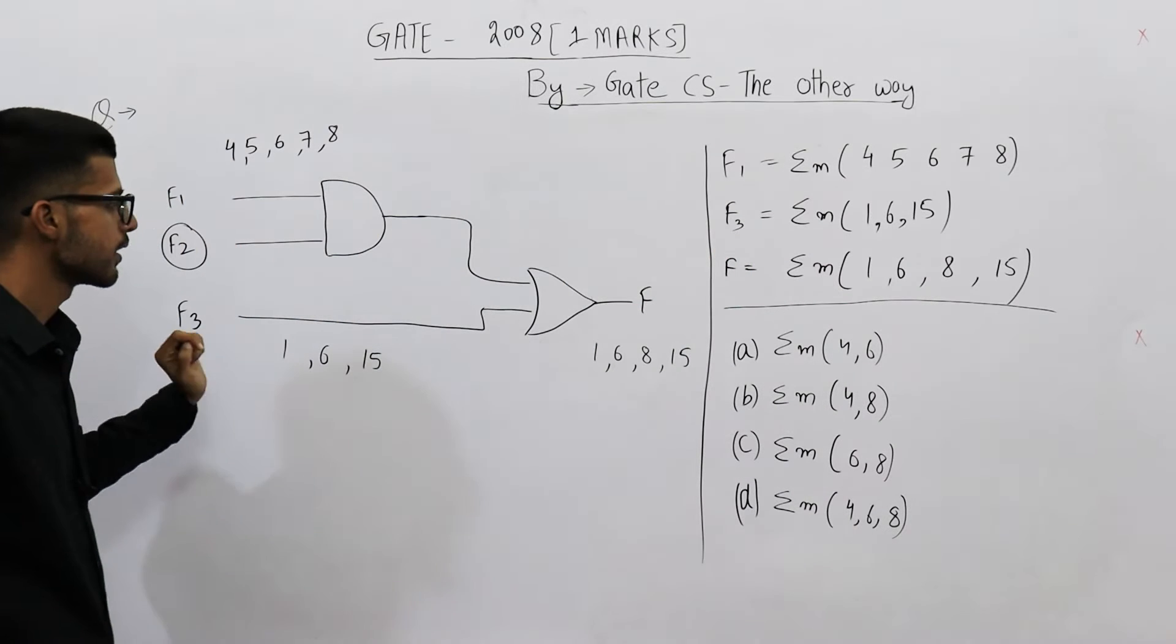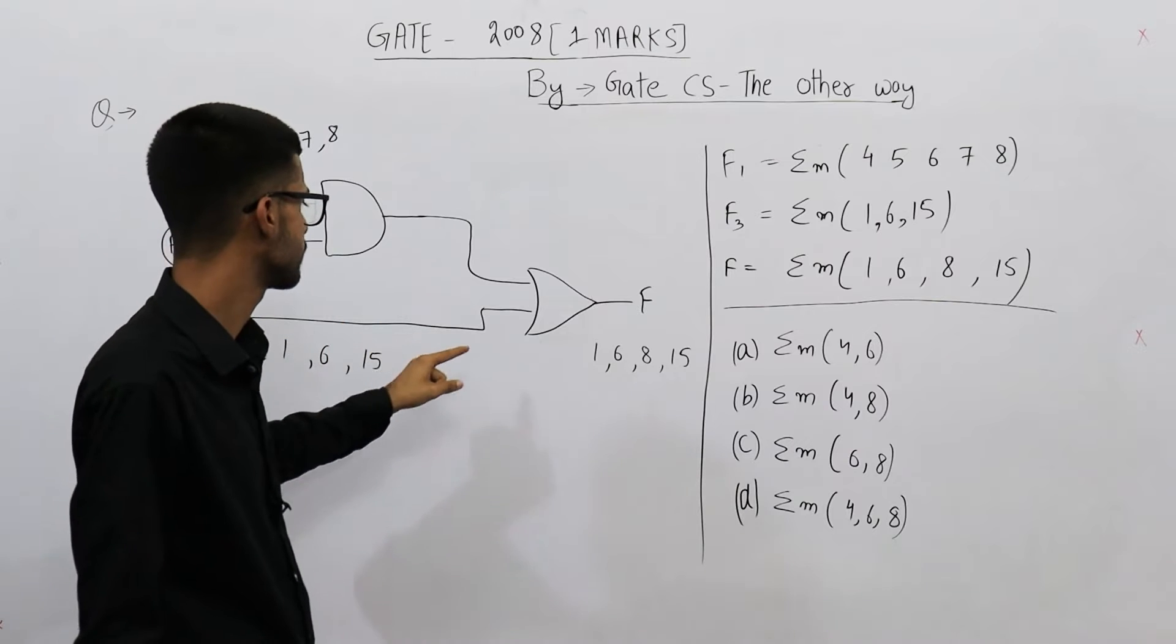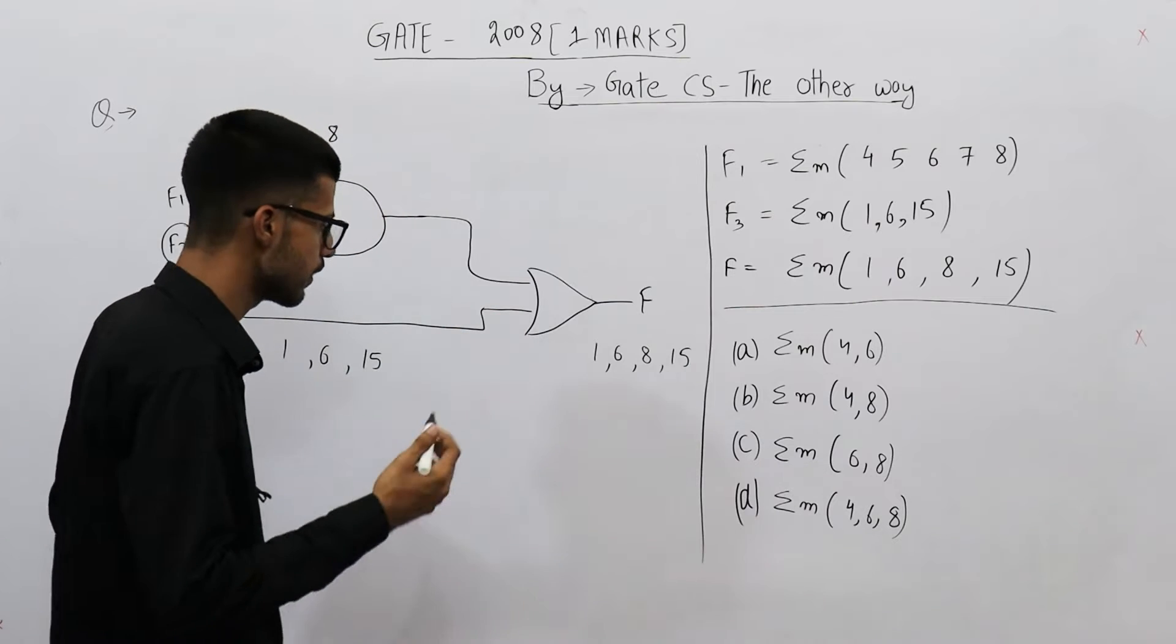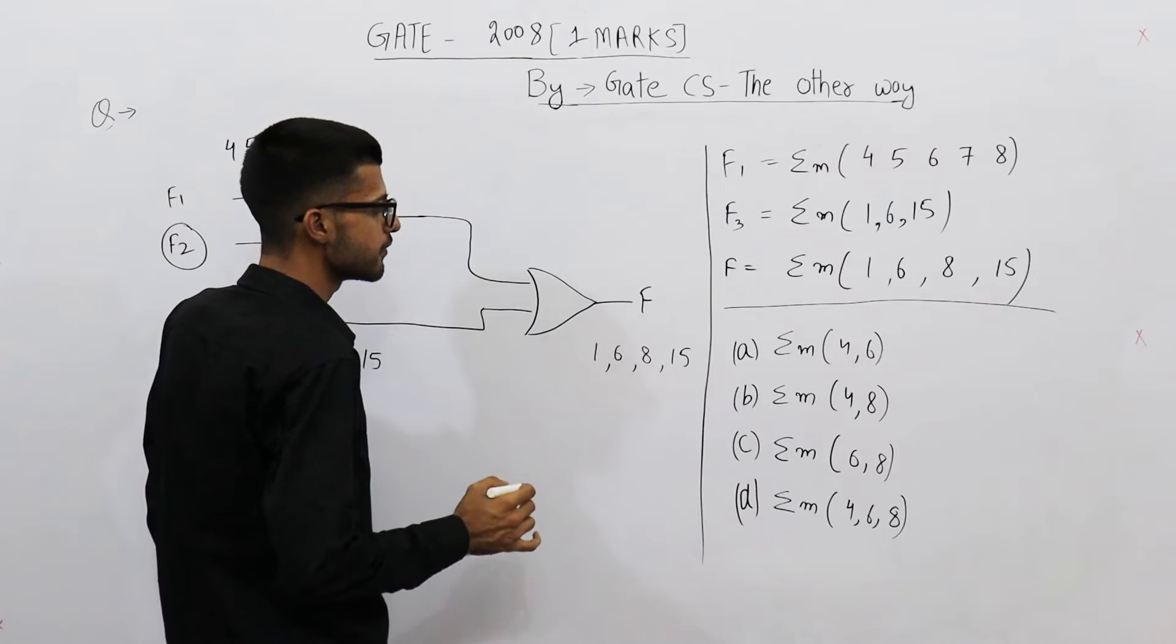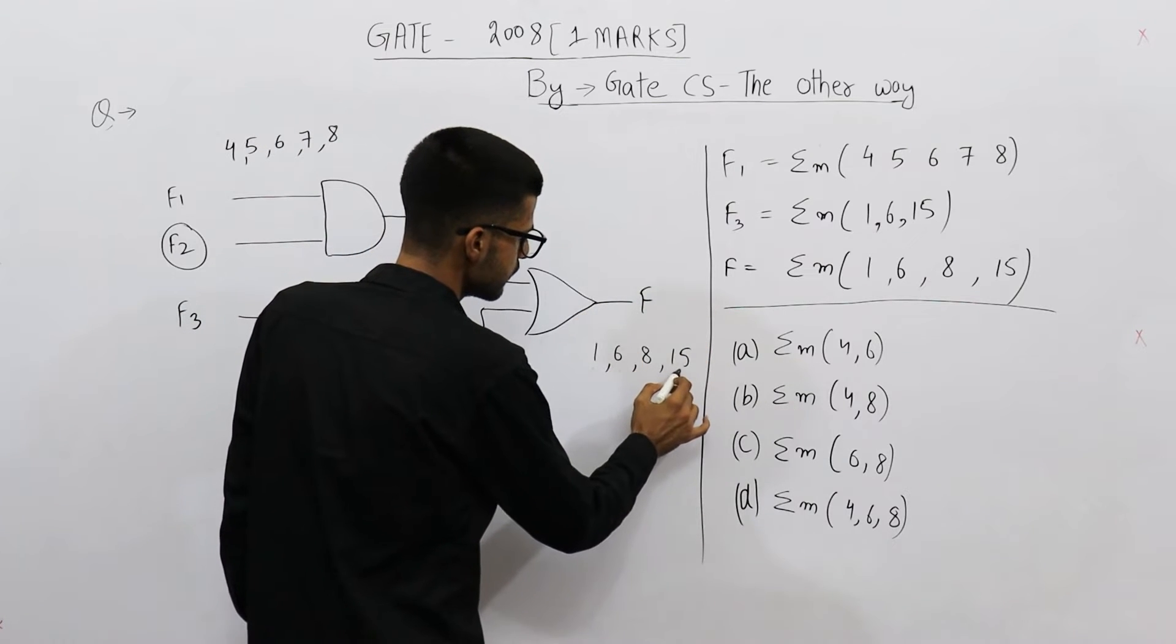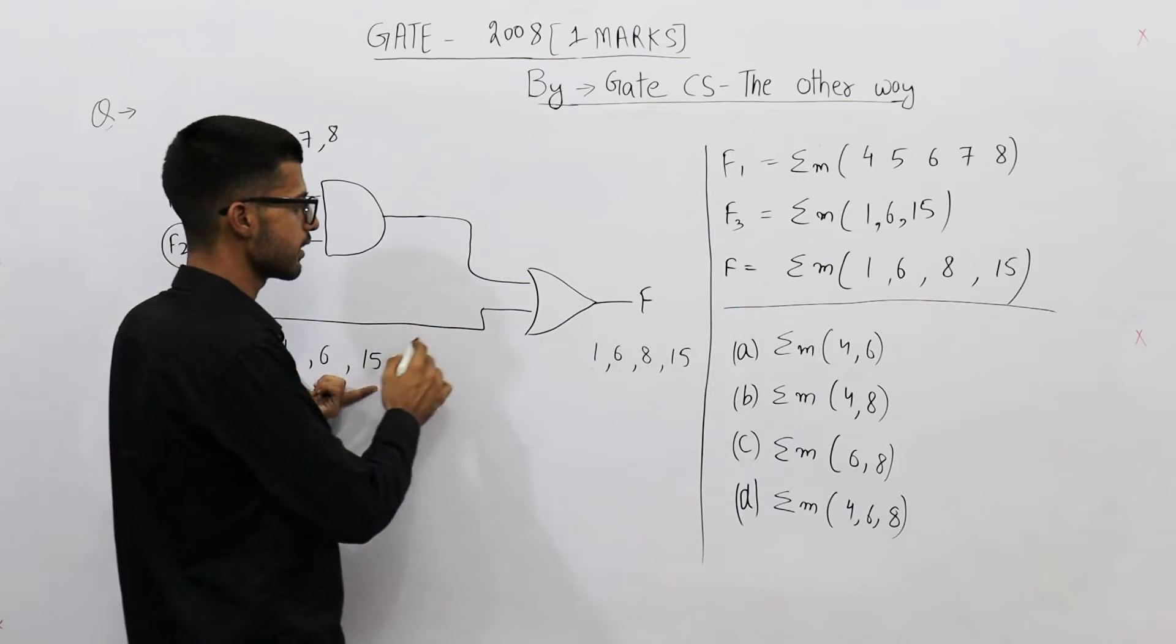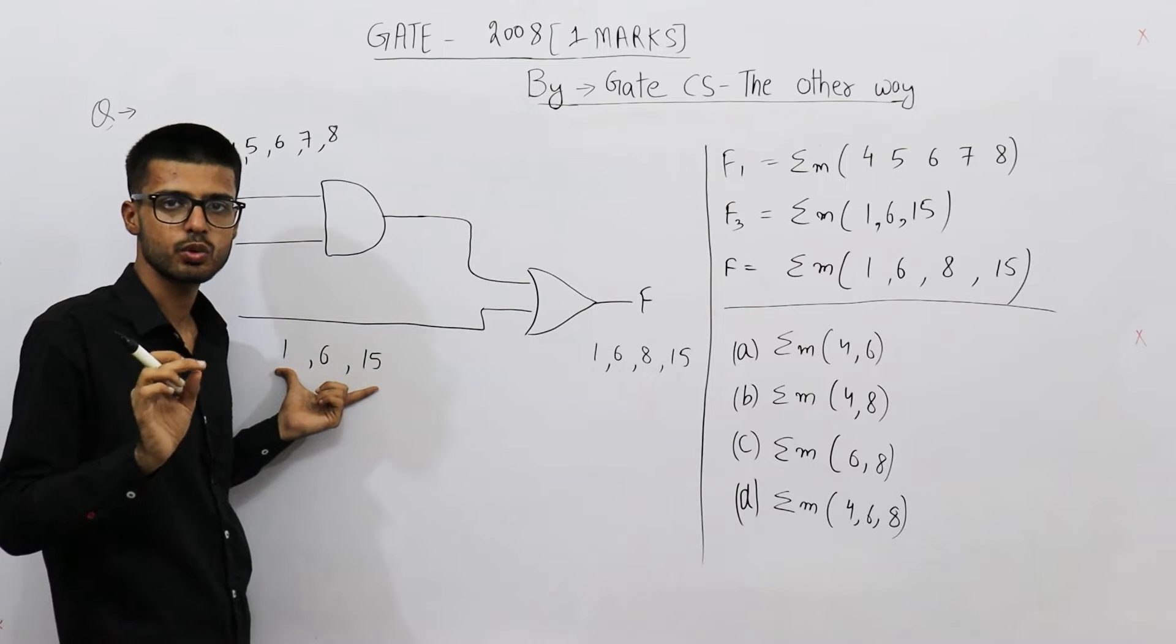It's f3. That means whenever the input to f3 is 1, 6, or 15, this wire will output 1. This wire will be high or contain a positive voltage. And output of this f gate is f equals 1, 6, 15, and 8. 1, 6, 15 we have here.